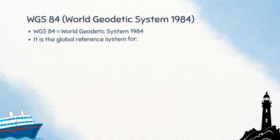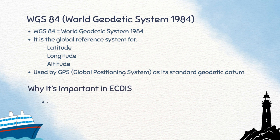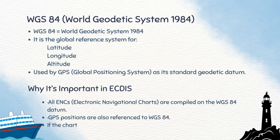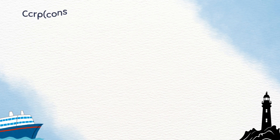WGS 84 is the World Geodetic System 1984. It is the global reference system for latitude, longitude, and altitude, and it is also the standard used by GPS. It is important because all electronic navigational charts, ENCs, are compiled on WGS 84, which ensures that accuracy is maintained. If a chart is not based on WGS 84, a datum shift may occur, causing position errors.